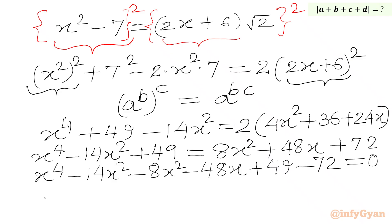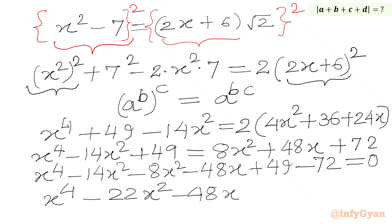Now we take all terms to the LHS: x power 4 minus 14x squared minus 8x squared minus 48x plus 49 minus 72 equals 0. Combining like terms: x power 4 minus 22x squared minus 48x minus 23 equals 0.